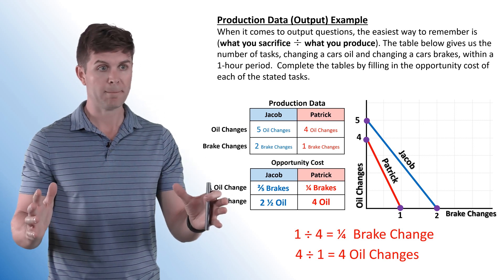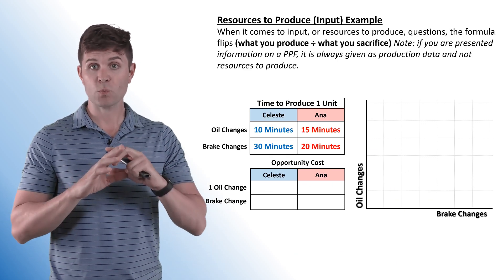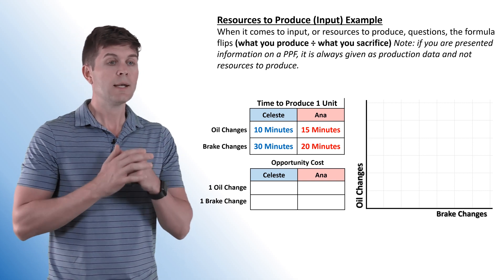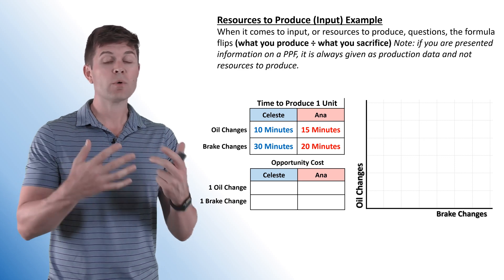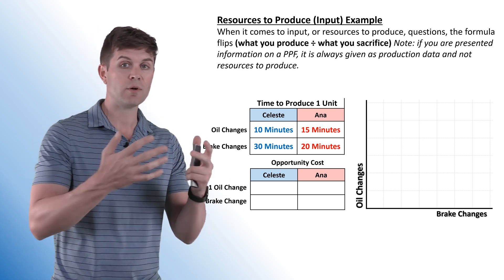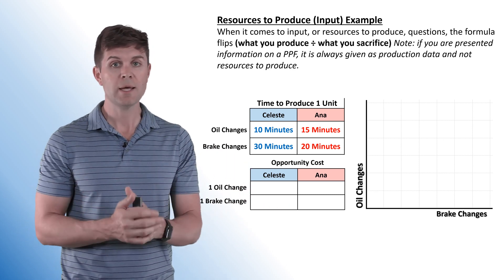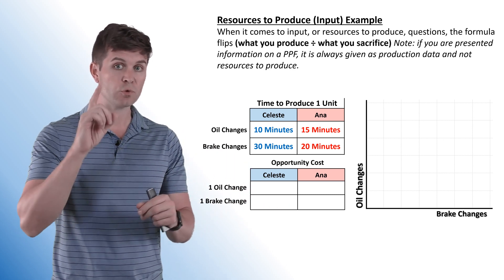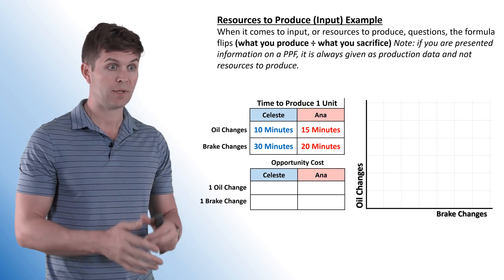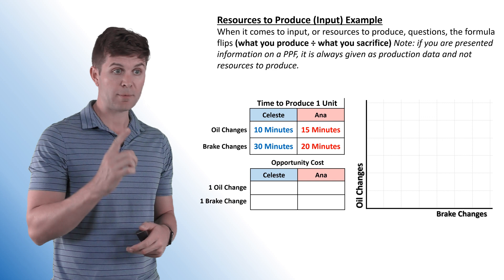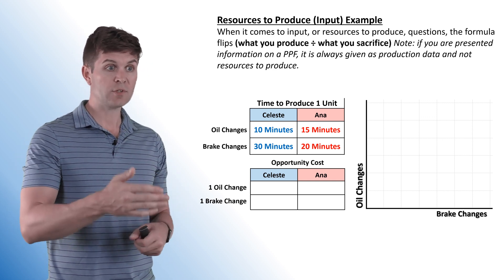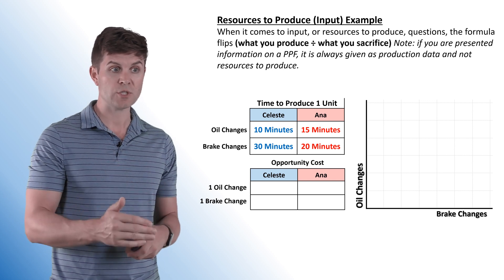Next are the resources-to-produce questions, also referred to as input questions. These could be hours to produce, minutes to produce, units of labor, units of resources — whatever it might be. It's saying what you need to produce one unit. Make sure you're paying attention to what the labels actually tell you. In this case, it's time to produce one unit — one oil change or one brake change.